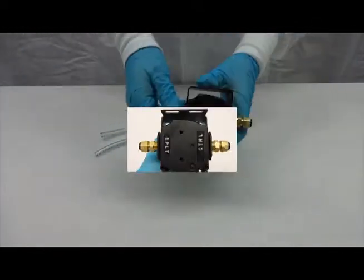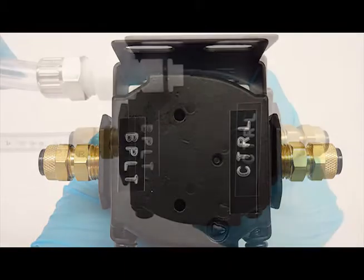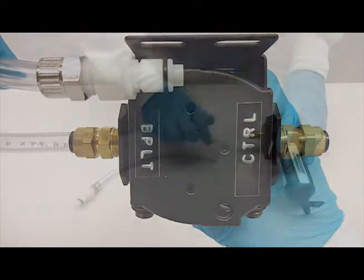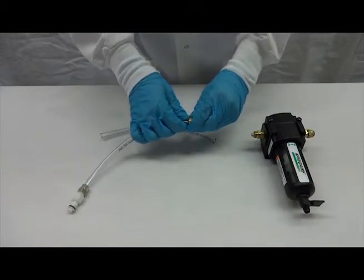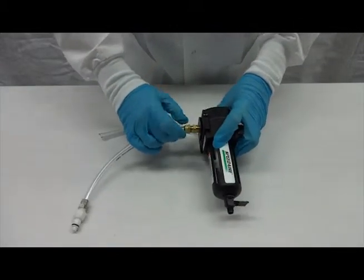Remove the brass nut with the acetyl sleeve from the BPLT or base plate port, insert the tubing with the quick disconnect attached, the side that goes to the base plate, into the acetyl sleeve, push the tubing onto the fitting, and thread the nut onto the fitting by hand.